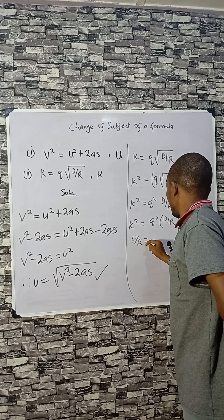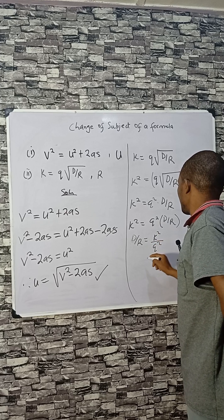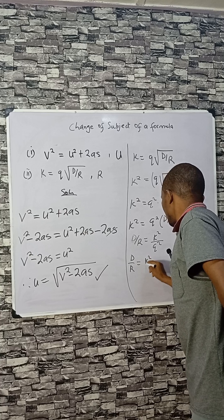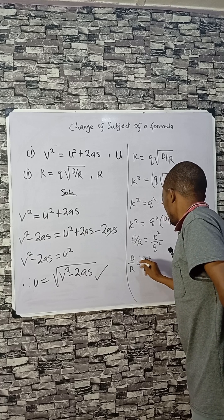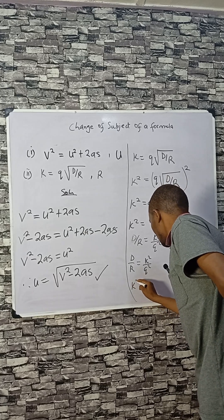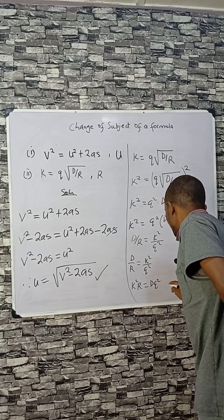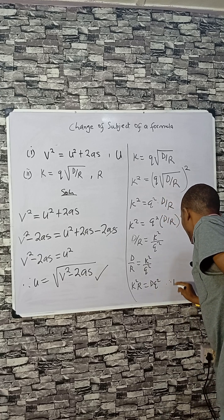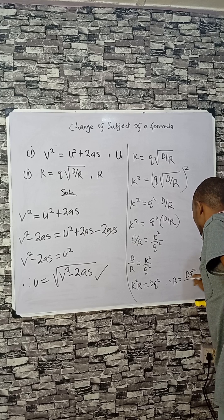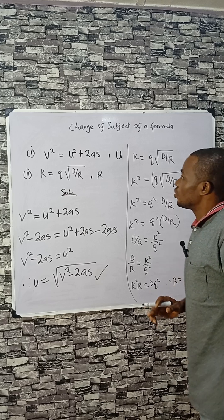k squared times d divided by r, so we make d divided by r the subject. That will be k squared divided by q squared, and we are done. d divided by r equals k squared divided by q squared. Therefore r equals d times q squared divided by k squared. This is the answer.